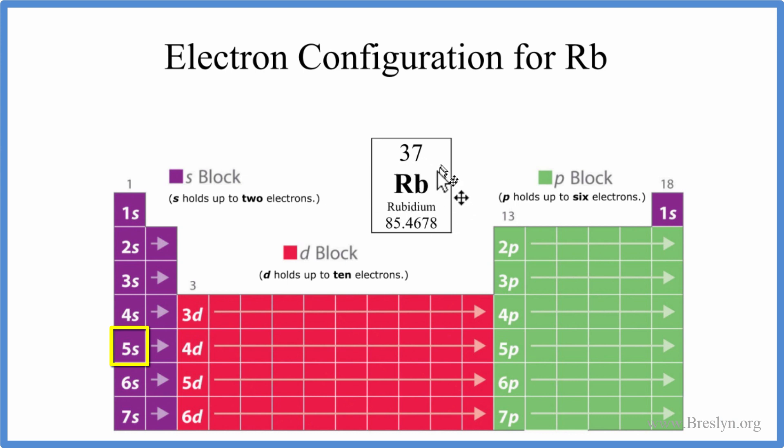And because this is neutral, it doesn't have a plus or a minus after it, that means the number of protons is equal to the number of electrons. So we have 37 electrons for rubidium and we need to distribute those around the nucleus. That's what the electron configuration tells us - where they are oriented around the nucleus of the rubidium atom.